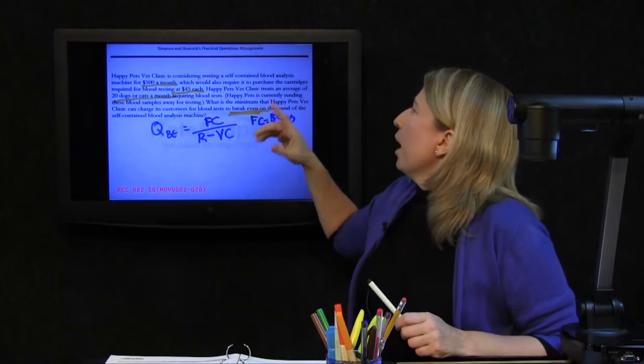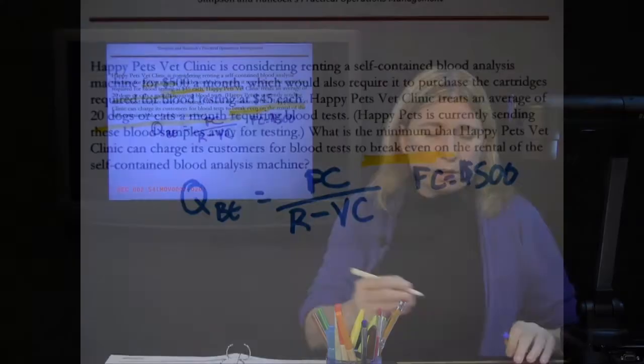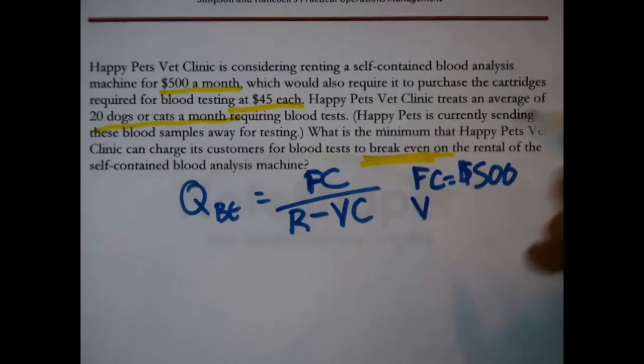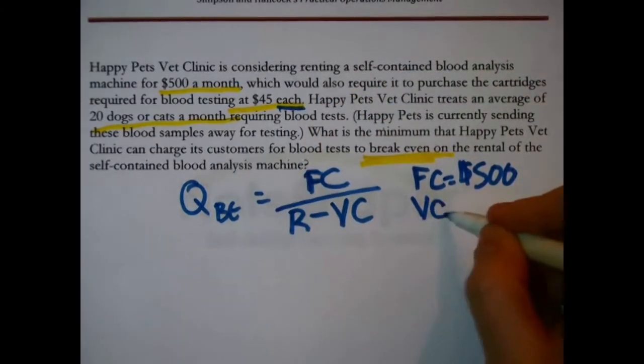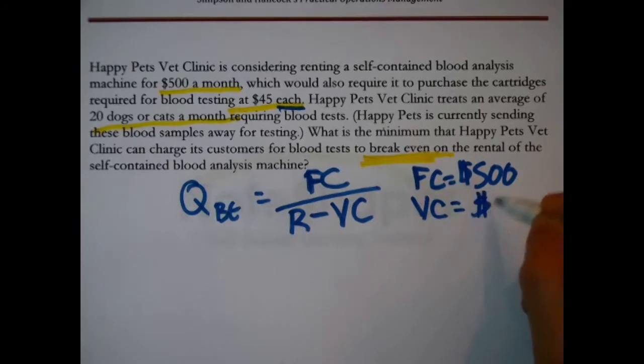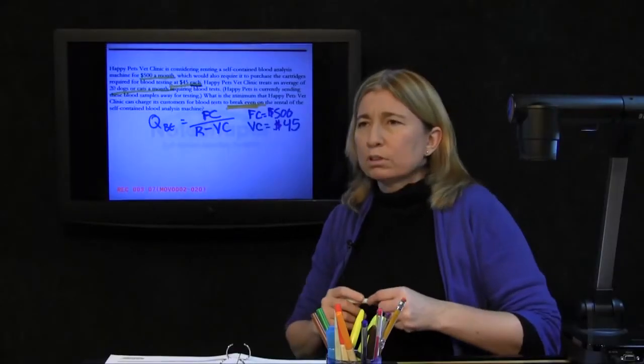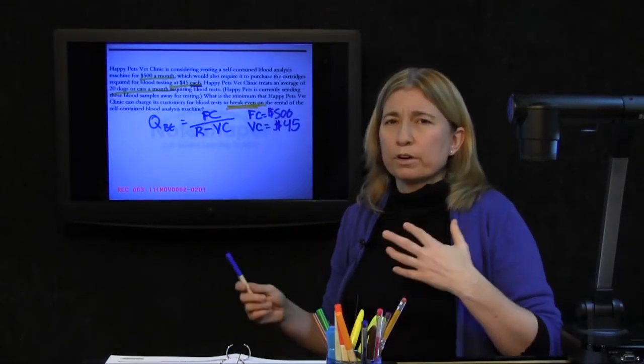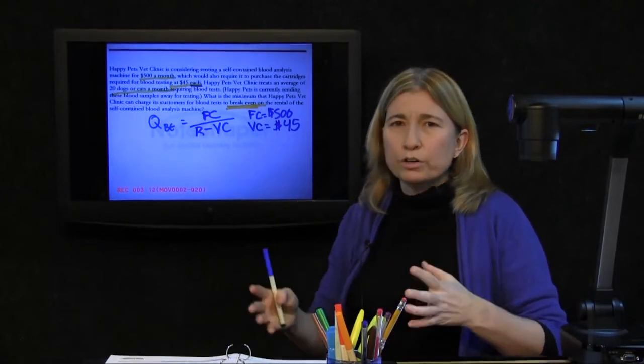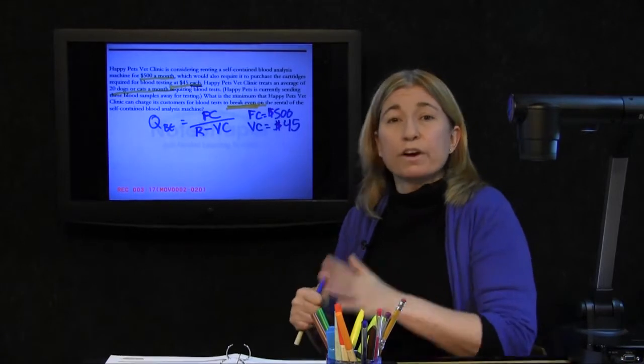The machine requires cartridges that cost $45, and the operative word there is each, classic variable cost. If they do one blood sample test, they'll burn up one cartridge, that's $45. If they do 100, 45 times 100. That cost varies with their use.